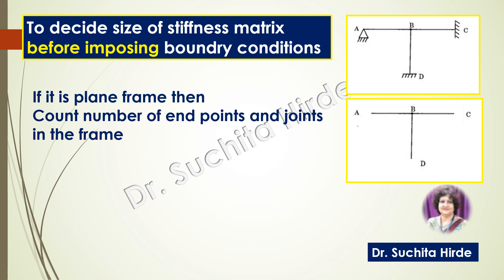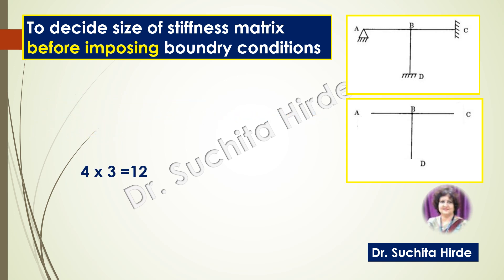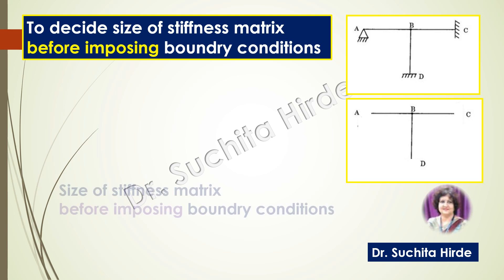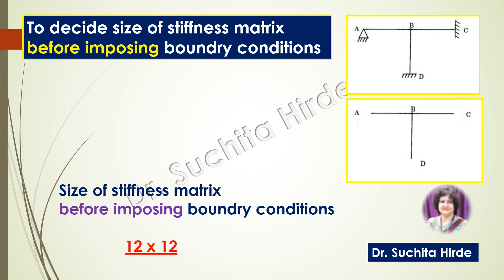So in this frame there are four points: A, B, C and D. At every point there are three unknown displacements. So 4 multiplied by 3 is equal to 12. Therefore the size of the stiffness matrix before imposing boundary conditions will be 12 by 12.